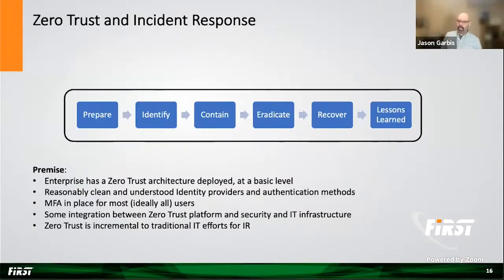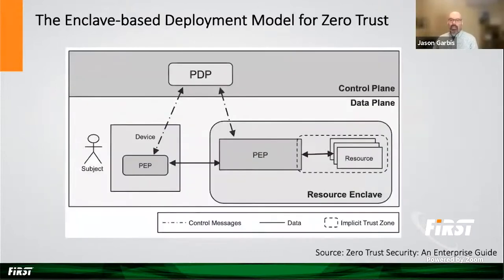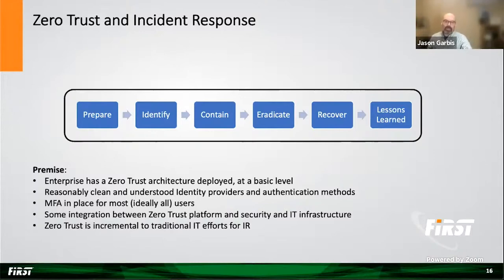So let's look at this from an IR perspective. Clearly, everyone on the call is familiar with the six phases of incident response. What we're going to do is walk through each of these and look at how a zero trust enterprise would have a different perspective or different set of capabilities. Our premise here is that the enterprise has some sort of zero trust system deployed using the enclave-based model, working in reasonably good operational form. They have good authentication methods and well-understood identity providers, multi-factor authentication in place for hopefully all users, and some level of automated integration between the zero trust infrastructure and their security and IT systems — feeding enriched information to the SIEM and tying into a SOC and service desk.